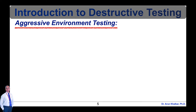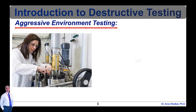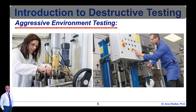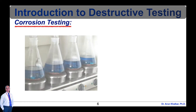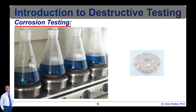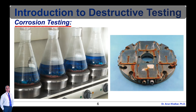Now let's see few examples of destructive testing. First is aggressive environment testing. This includes fracture and fatigue testing in SOR-H2S, sweet CO2 and other corrosion environments at a range of temperatures and pressures. These tests allow industry to assess the impact of these conditions on materials and performance. Next is corrosion testing, which covers non-toxic, small-scale, aqueous corrosion testing in a variety of different environments, including fresh and seawater.